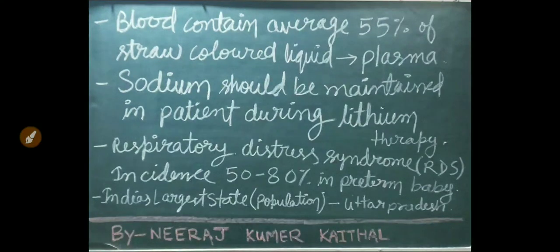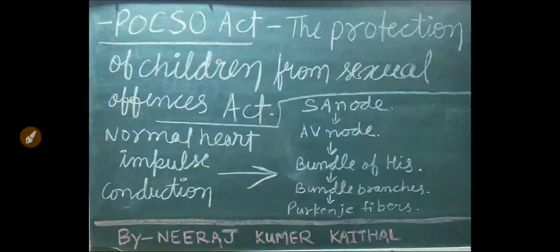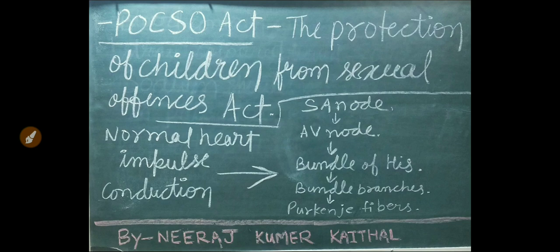India's largest state according to population is Uttar Pradesh. Full form of POCSO Act is the Protection of Children from Sexual Offences Act. Normal heart impulse conduction: impulse is generated from the sinoatrial (SA) node, transmitted to the AV node, then reaches the bundle of His, then to bundle branches, and finally the Purkinje fibers.